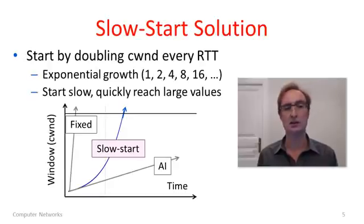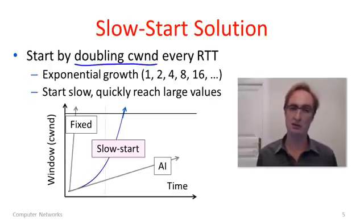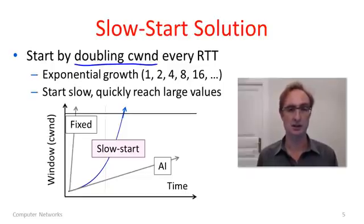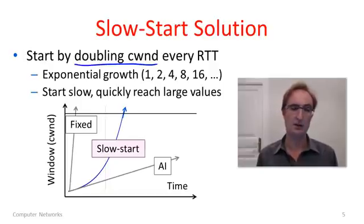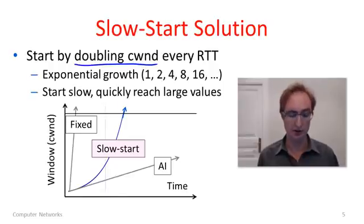Slow start is the solution to this problem. Slow start doubles the congestion window every round trip time, so it's already adapted to the RTT since we can measure that. By doubling the congestion window we get exponential growth: 1, 2, 4, 8, 16. The growth is initially fairly slow but rapidly becomes very large — that's what exponentials do. This means it reaches large values very quickly but starts off more softly, so it tends not to overshoot as much.